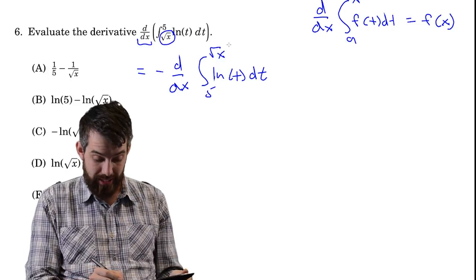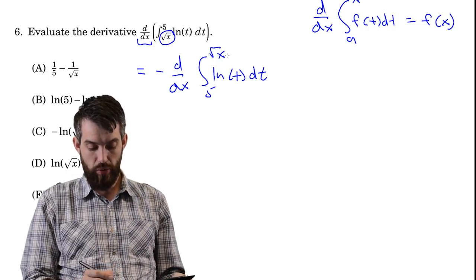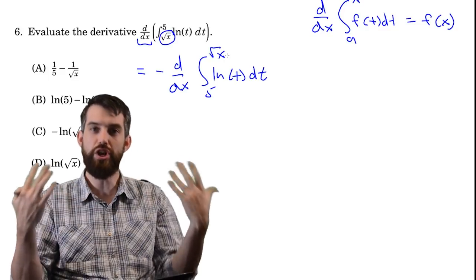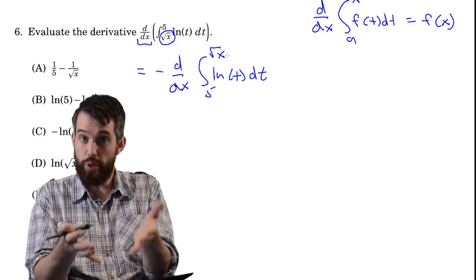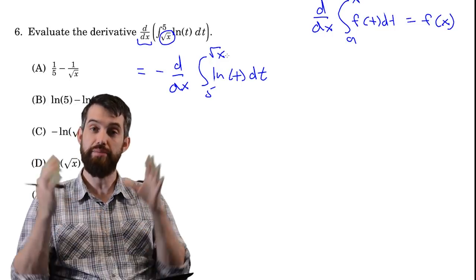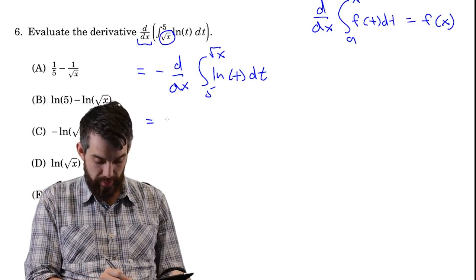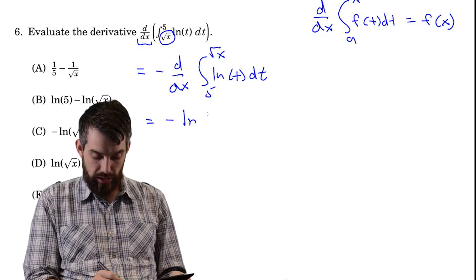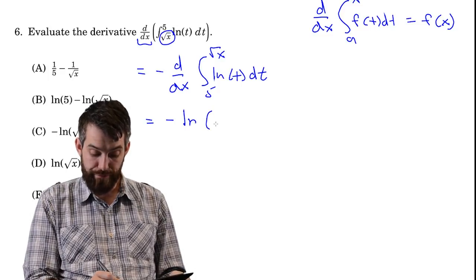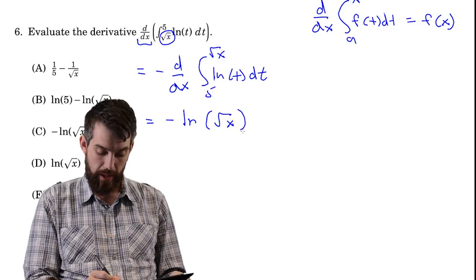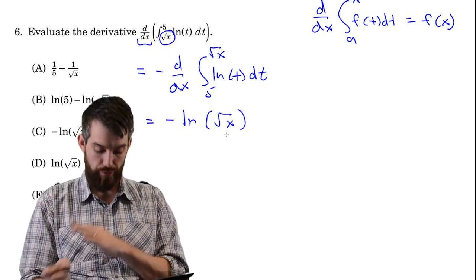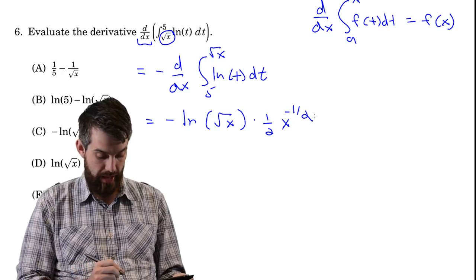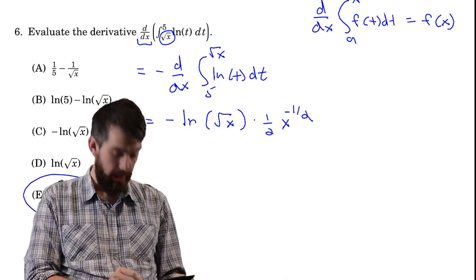The second issue is that the upper limit is sqrt(x), not just x, so I need the chain rule. FTC gives the derivative of the integral as log evaluated at sqrt(x), then multiplied by the derivative of sqrt(x). So the result is negative log(sqrt(x)) times one-half x to the minus one-half. That matches answer E.